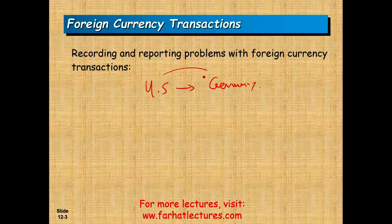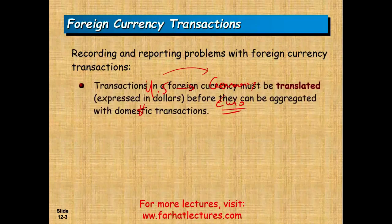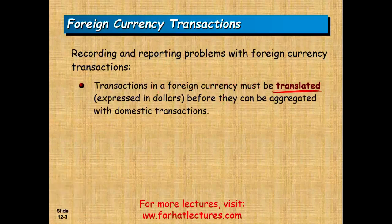When buying goods and services from Germany, the German company wants to be paid in Euros. The U.S. company will have to record their transactions in U.S. dollars. So transactions in a foreign currency must be translated — expressed in a dollar amount — before they can be aggregated with domestic transactions.